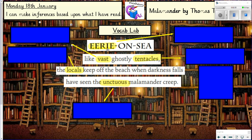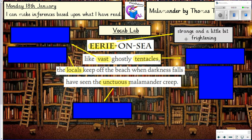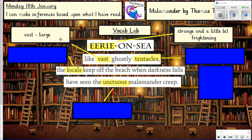First of all, we start with 'Eerie on Sea,' which is the place. What does 'eerie' mean? Well, eerie means a bit strange and a little bit frightening. So the place itself is called Eerie on Sea, and eerie means strange and a little bit frightening. And we've got the phrase 'like vast ghostly tentacles.' Just check — you know the meaning of the word 'vast': vast means large. So like when we talk about a vast landscape, it's a big, large open landscape.